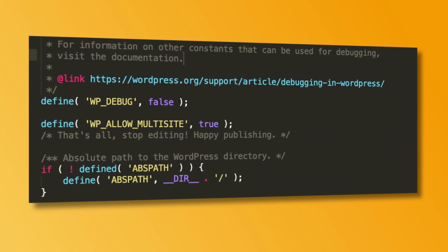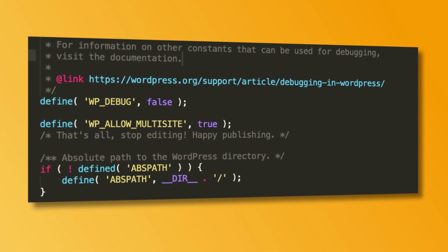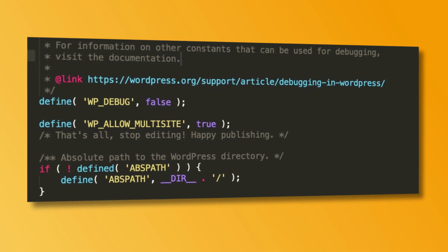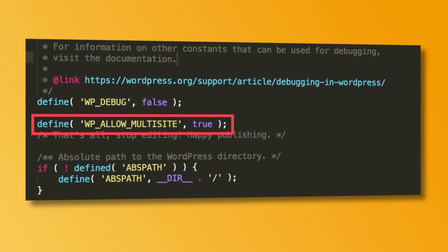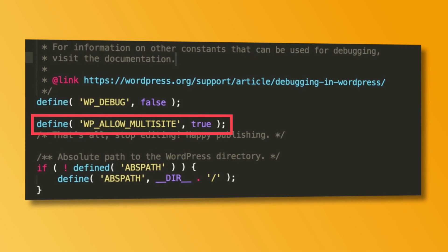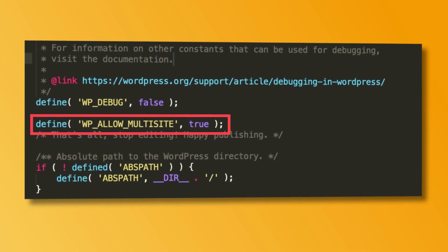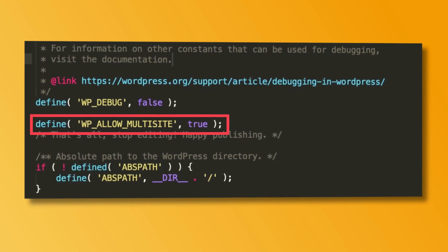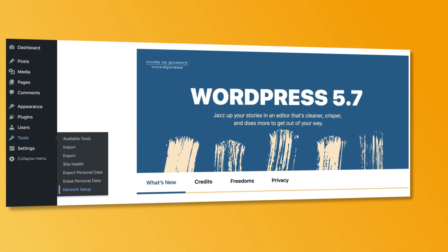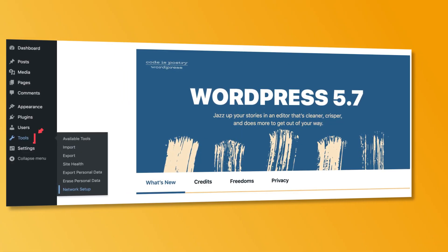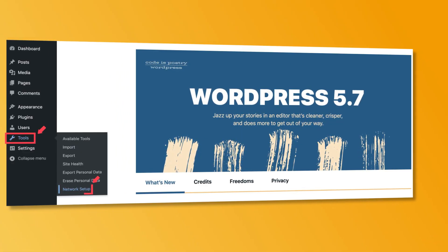If you think WordPress multi-site is for you, let me show you how to set it up. Open wp-config.php in the WordPress root directory, find the comment line, add the following constant above that line, and save wp-config.php. Next, log into your WordPress admin dashboard and go to Tools, then Network Setup.